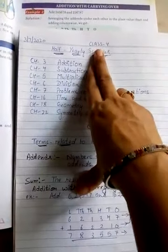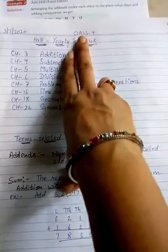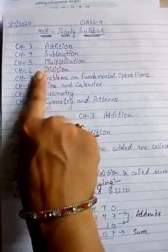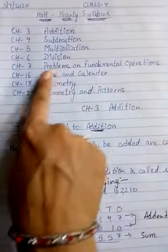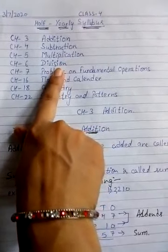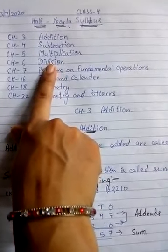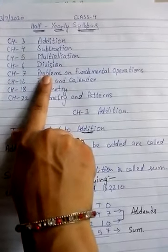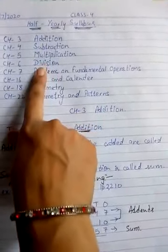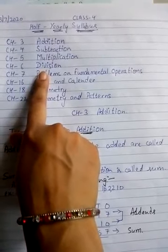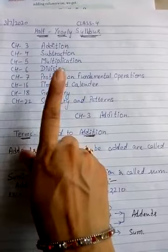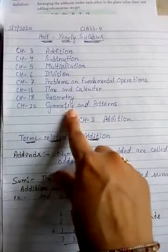Write half-yearly syllabus. Don't mention your class. Half-yearly syllabus: Chapter 3 Addition, Chapter 4 Subtraction, Chapter 5 Multiplication, Chapter 6 Division - these are the four fundamental operations of mathematics. Then Chapter 7 Problems on all four fundamental operations, Chapter 16 Time and Calendar, Chapter 18 Geometry, Chapter 22 Symmetry and Patterns.